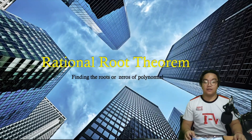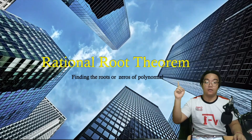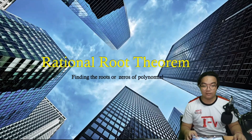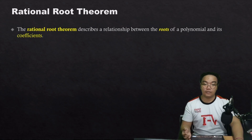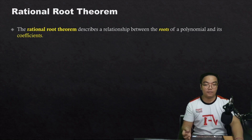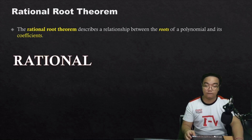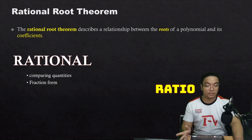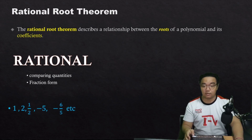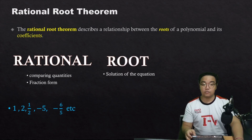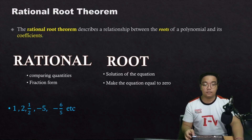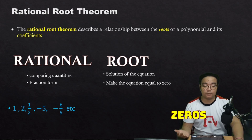Hello guys, for today's video we are going to learn how to find the roots or zeros of polynomials using the rational root theorem. The rational root theorem describes a relationship between the roots of a polynomial and its coefficients. 'Rational' comes from the root word ratio, meaning quantities that can be expressed in fraction form — for example, 1, 2, 1/2, negative 5, negative 6/5. 'Roots' means solutions to the equation that make it equal to 0.